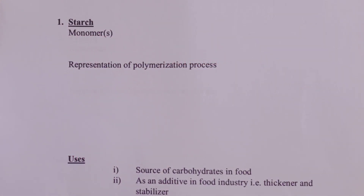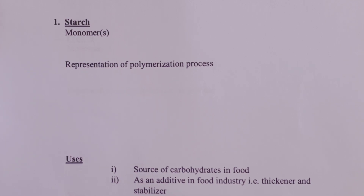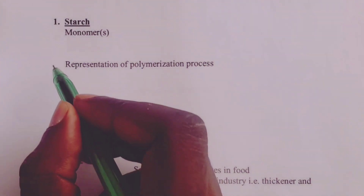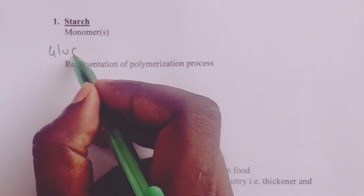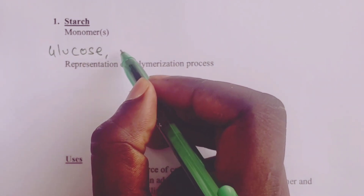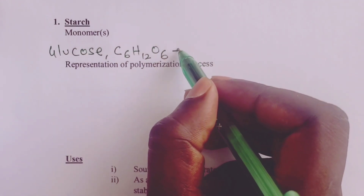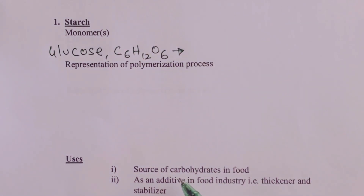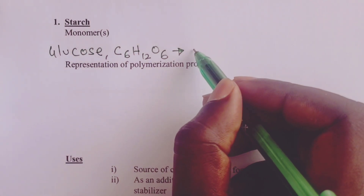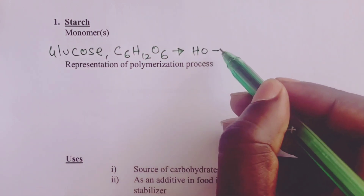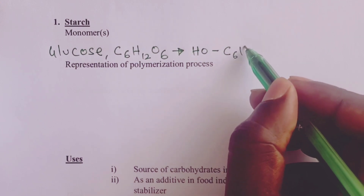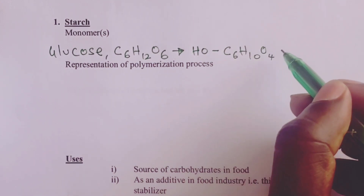The first condensation polymer we present is a natural polymer by the name starch. We begin with its monomer. The monomer of starch is glucose. Glucose has the formula C6H12O6. For purposes of this video, we want to show how the polymerization process takes place, so we shall write this structure as HO-C6H10O4-OH, because we want to show clearly how elimination of water comes in.